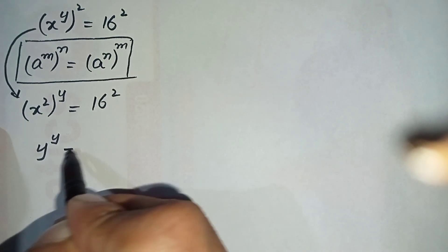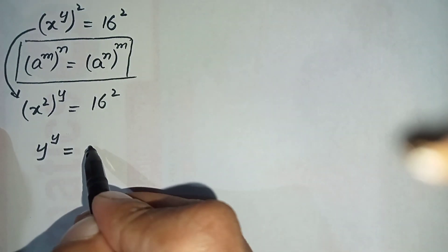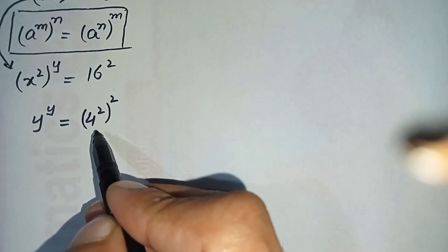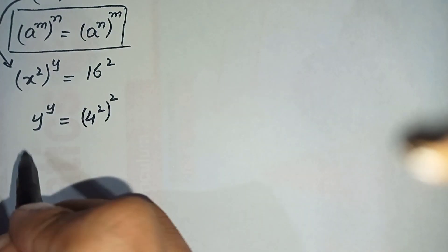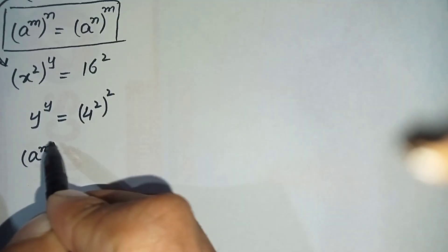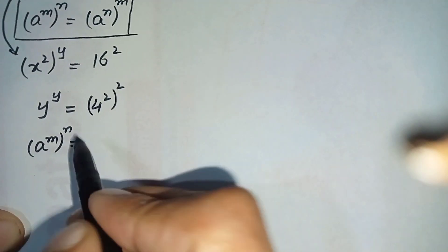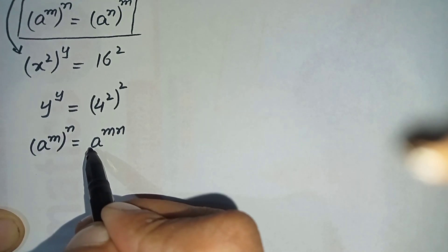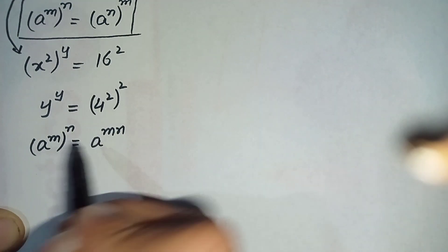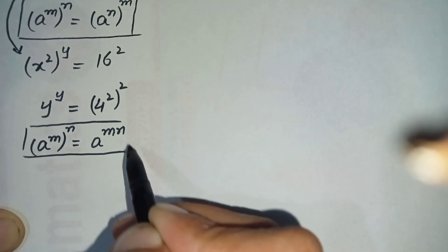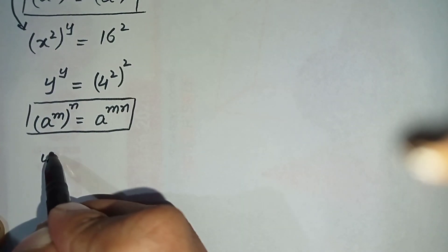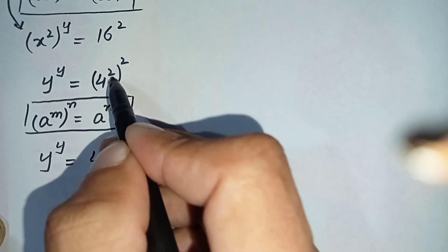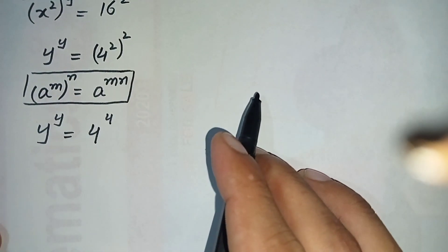This equation will become y raised to the power y is equal to 16 squared whole square. On the right hand side, we will again use the famous exponential property y raised to the power m whole raised to the power n — we multiply the powers. So two times two is four, giving y raised to the power y is equal to 4 raised to the power 4.